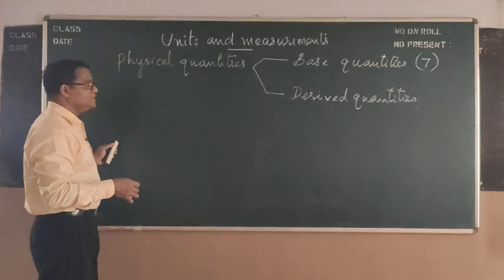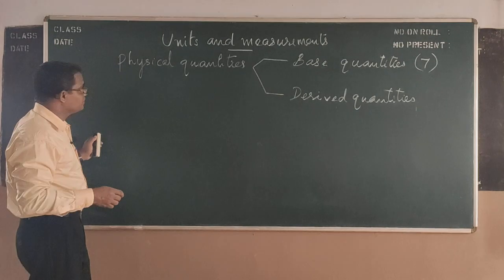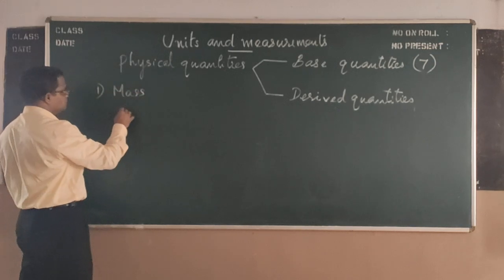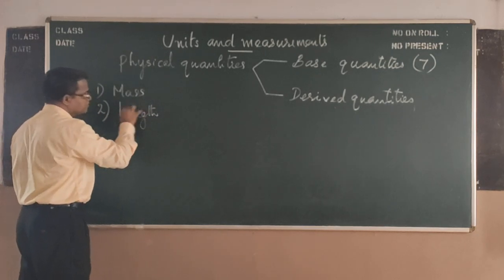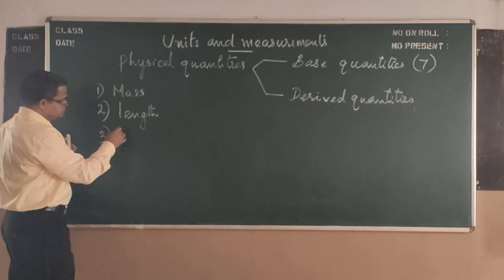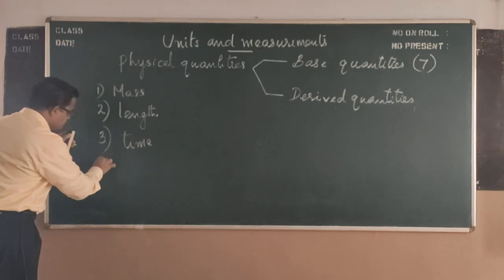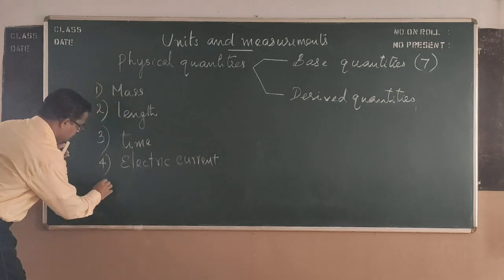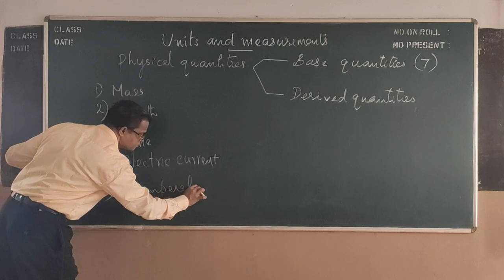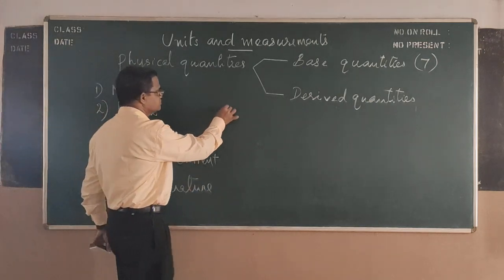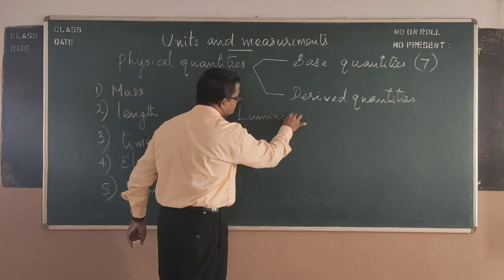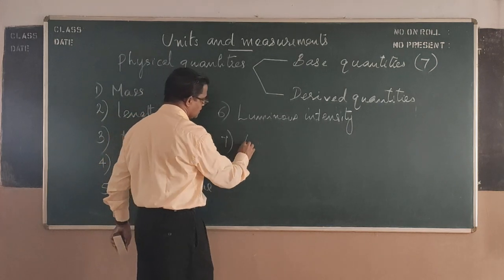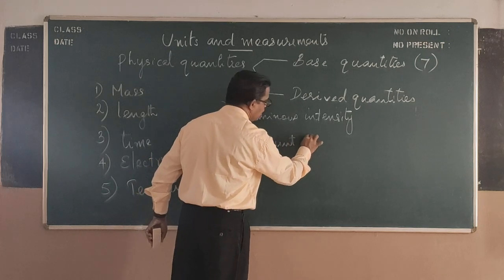So base quantities - they are fundamental or base independent quantities. We listed base quantities are: mass, length, time, electric current, temperature, luminous intensity, and the seventh one, amount of substance.